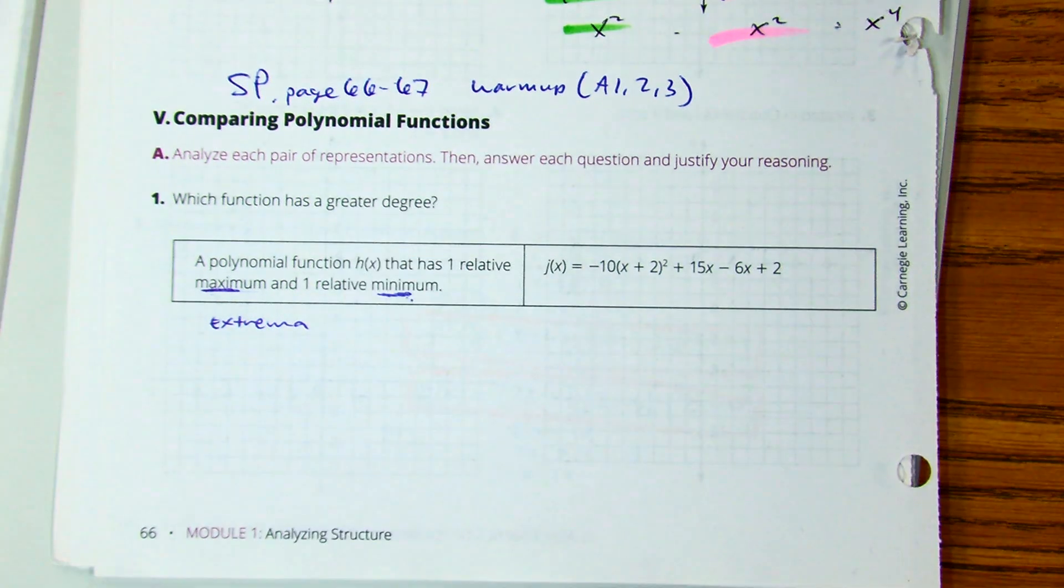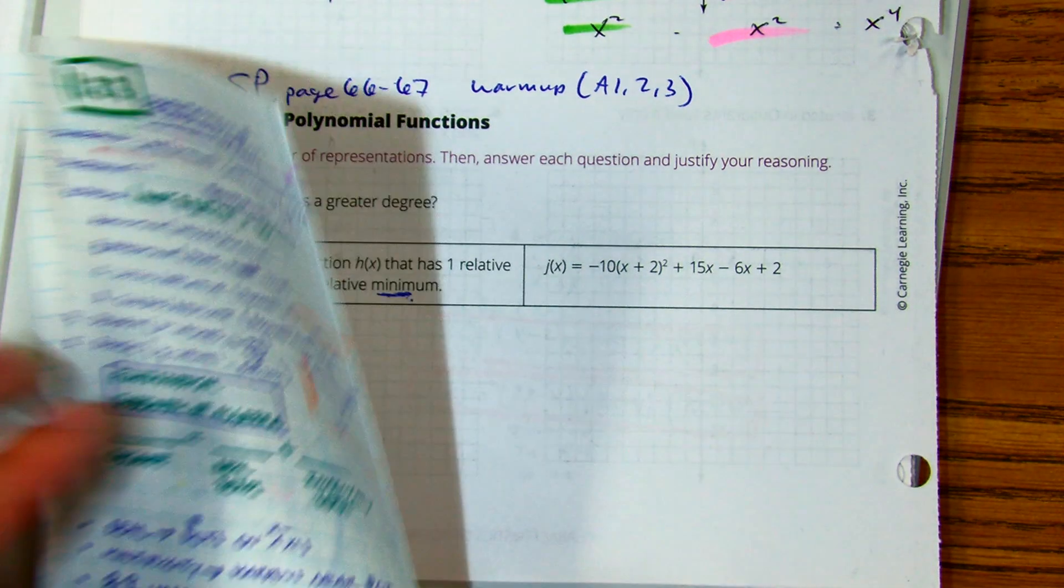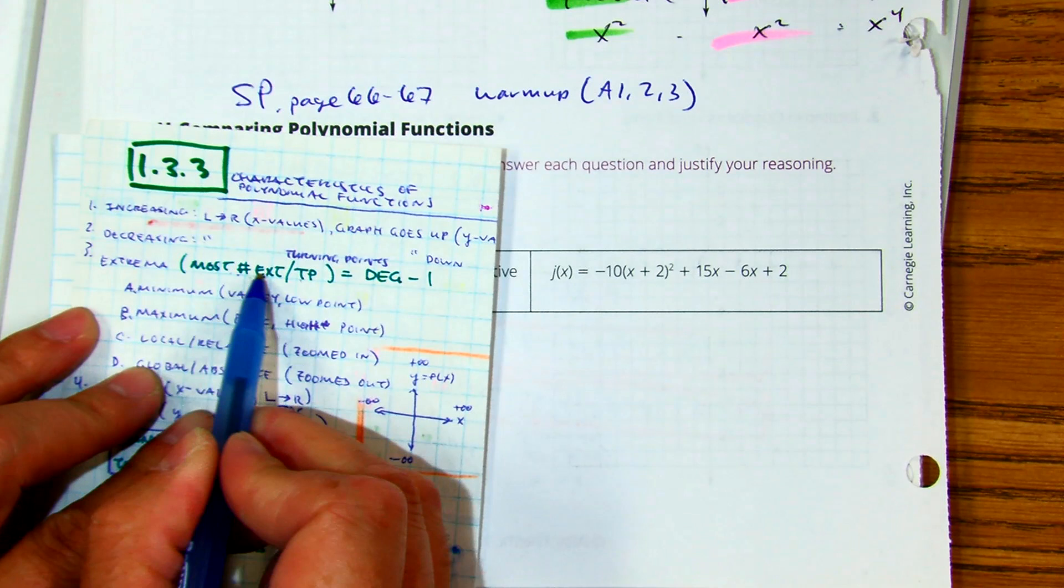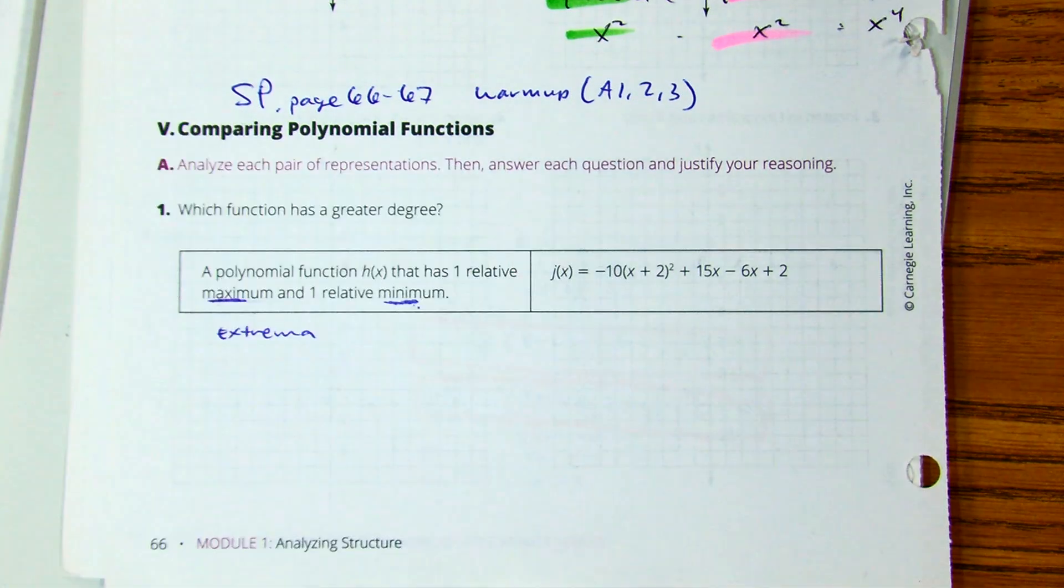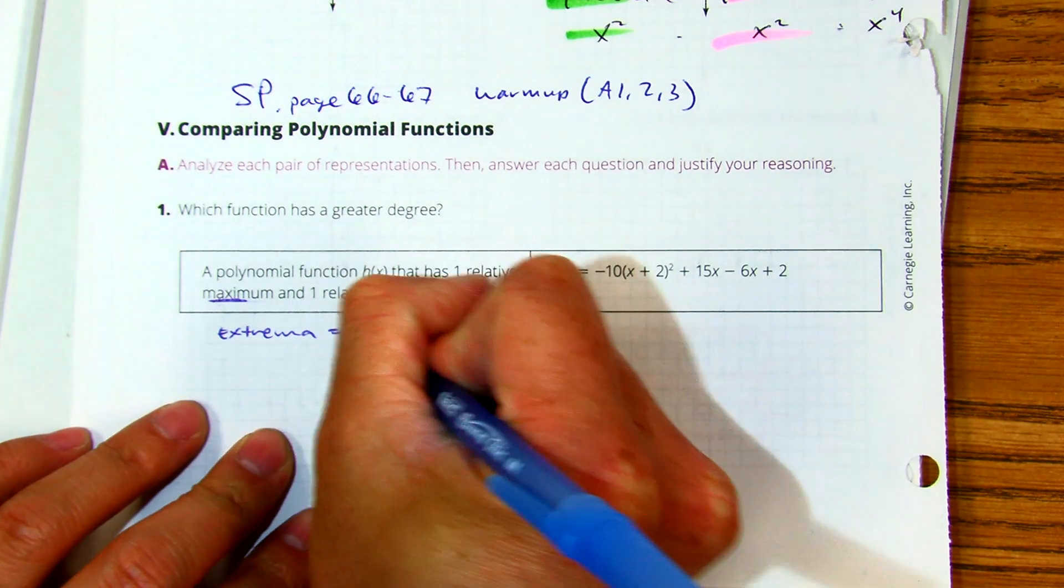If I look at my formula sheet, I have the most number of extrema or turning points equals degree minus one. So extrema equals degree minus one.